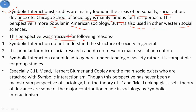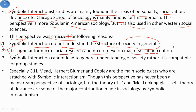This perspective was criticized for the following reasons. First, symbolic interactionism does not understand the structure of society in general. Second, it is popular for micro-social research and does not develop macro-social perception. Third, symbolic interactionism cannot lead to a general understanding of society; rather it is compatible for group studies or micro-studies. It is still used for the study of deviance, socialization, and personality.